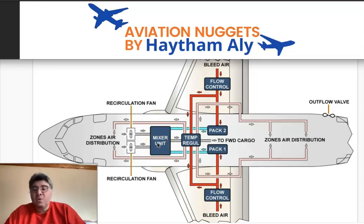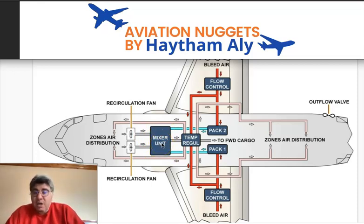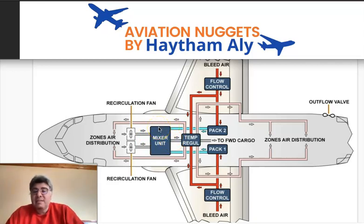The mixer unit is located in the aft part of the forward cargo compartment. If you release the lining of the forward cargo compartment, you will find the mixer unit there.